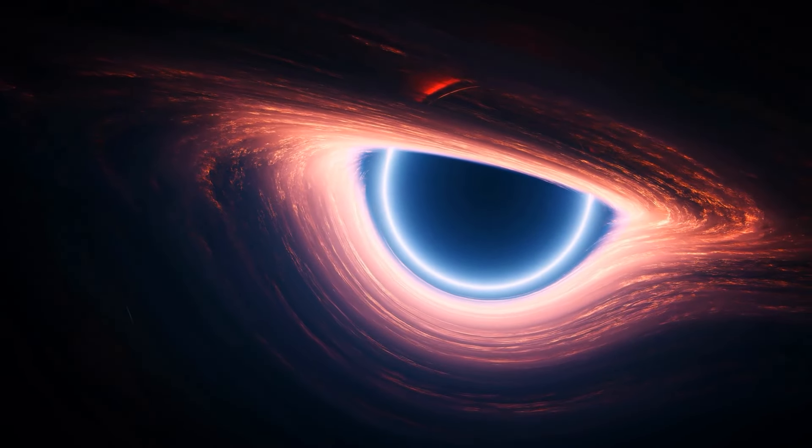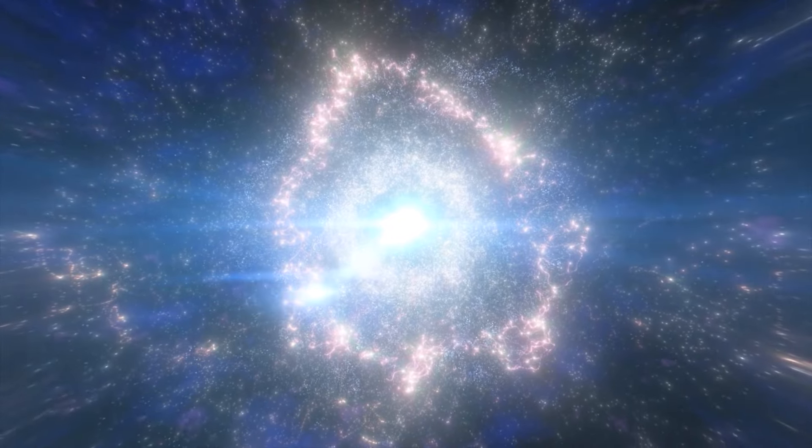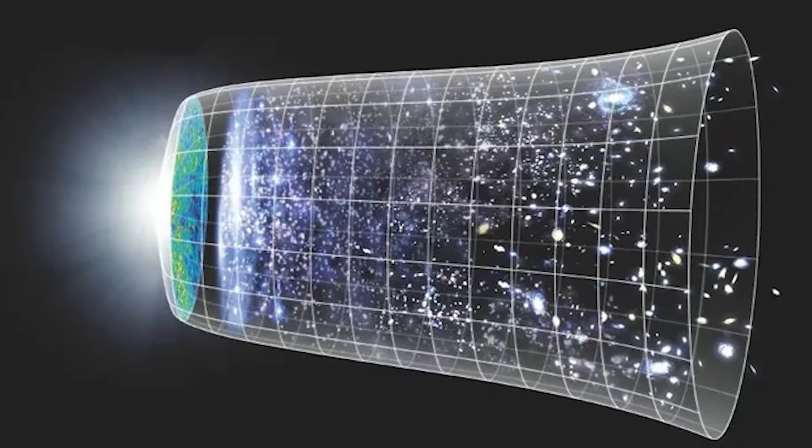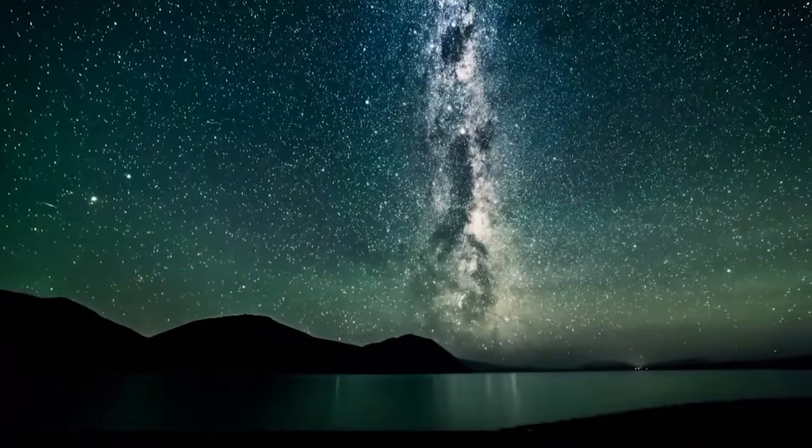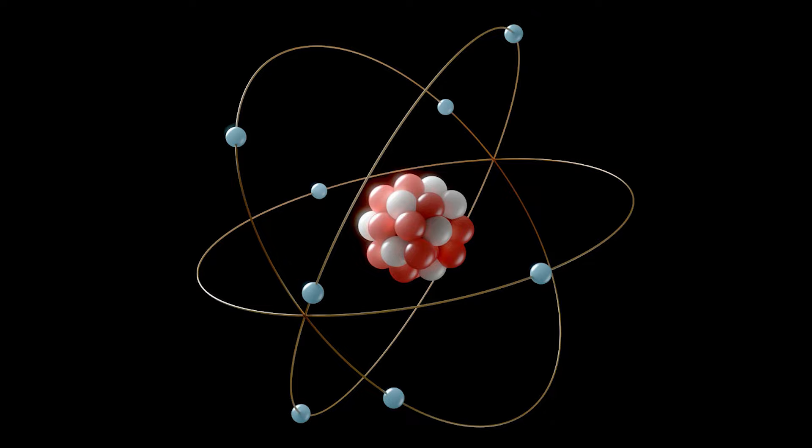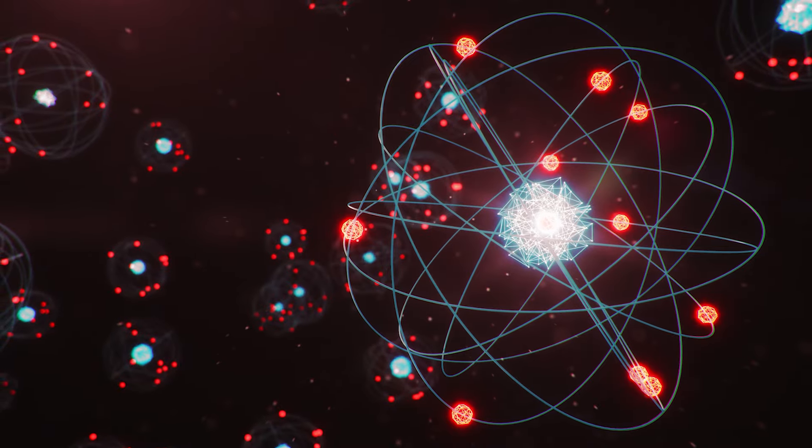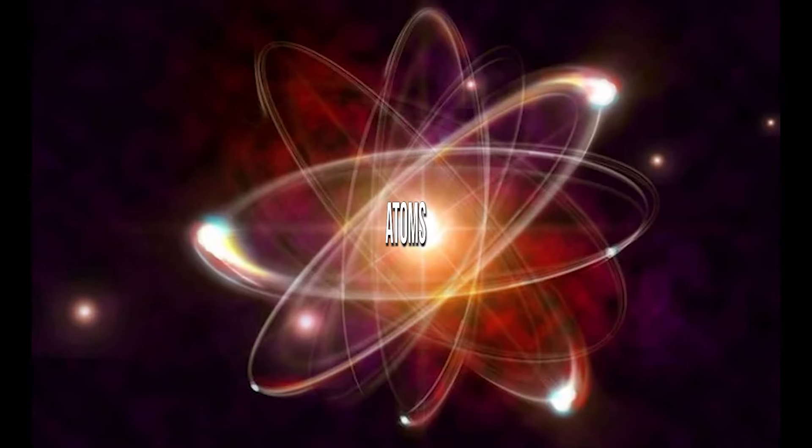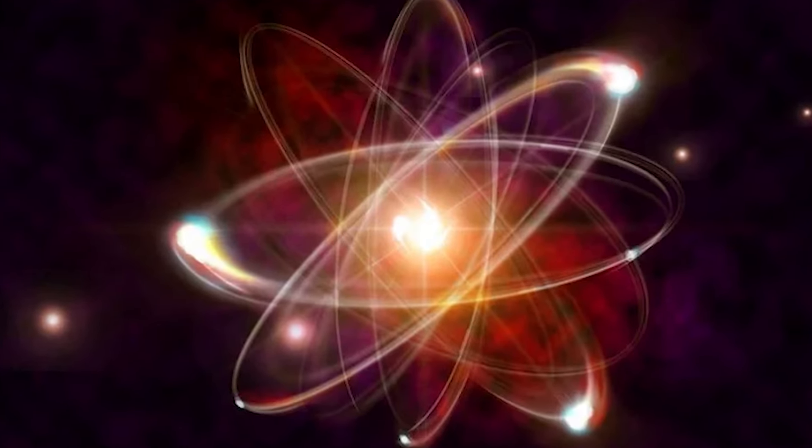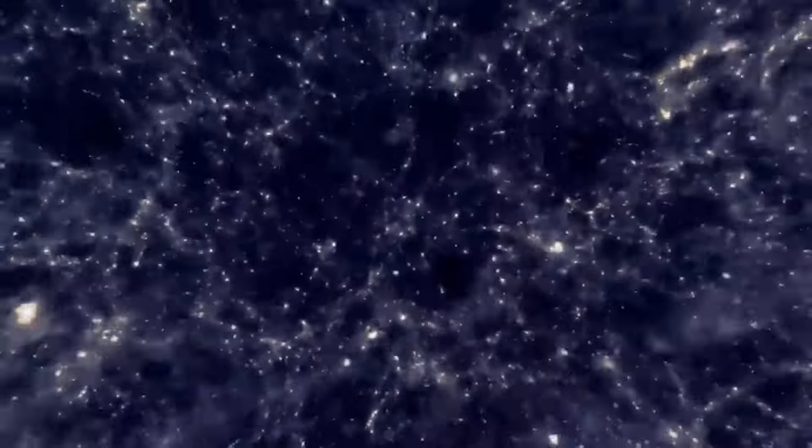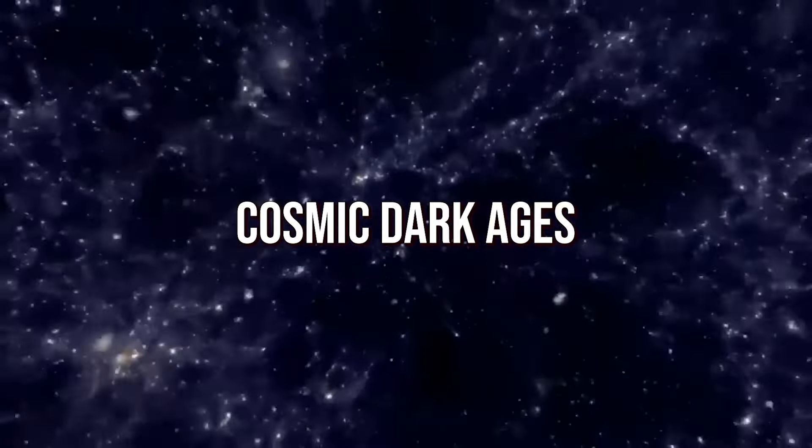Let's rewind back to when the universe was just starting out. After the Big Bang, things began to cool down. All the wild stuff flying around in space, like electrons and protons, eventually settled and mixed together to form atoms, mostly hydrogen. It was like a calm before the storm, a period we call the Cosmic Dark Ages.